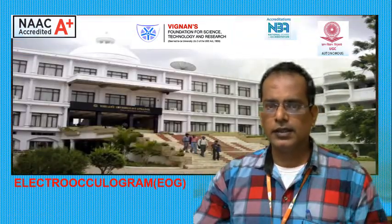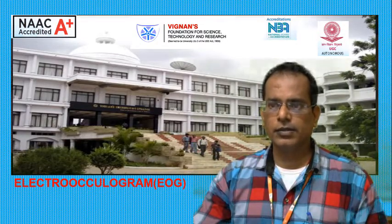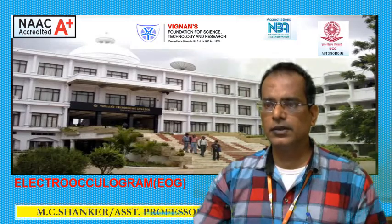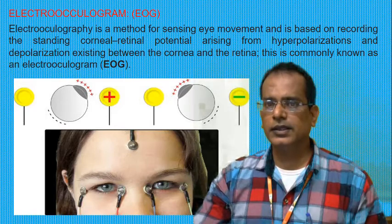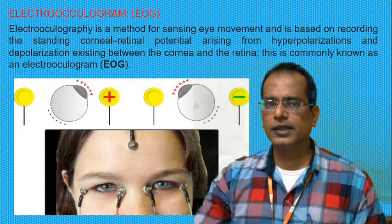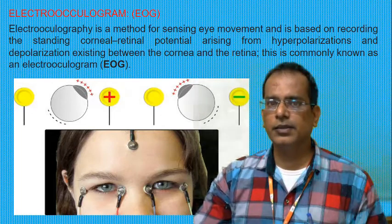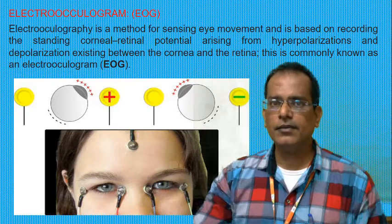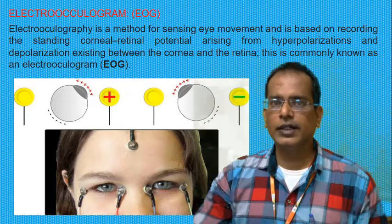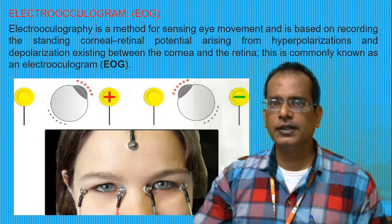Good morning students. Today we are going to learn about the electro-oculogram, which is a new topic. The electro-oculogram is used for recording the electrical signal from eye movement. There is a positive electrode and a negative electrode placed over the forehead and below the eye, where eyeball movement is recorded. Electro-oculography — 'graphy' meaning recording — records the movement of the eyeball.